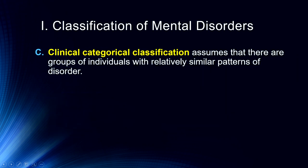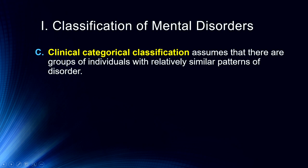Clinical categorical classification assumes there are groups of individuals with relatively similar patterns of a disorder. As we start understanding a disorder and investigate it further, we often find that while we've put people into one group, we really need to think about putting them into different groups. This has certainly happened with what we used to call spectrum disorders — autism, Asperger's, and similar disorders. For older adults, dementia is an umbrella classification for mental difficulties outside the normal developmental timeline, but now we can distinguish vascular dementia, Alzheimer's disease, and mixed presentations.